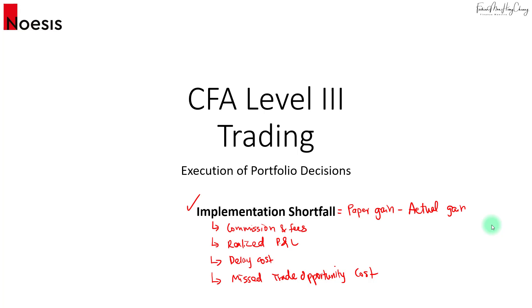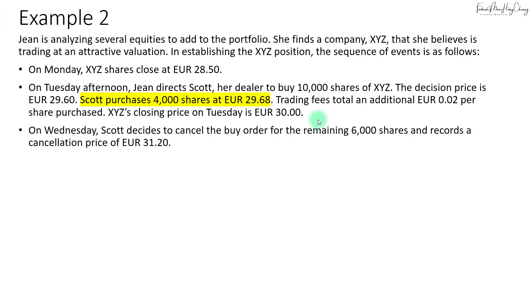Now let's look at the second scenario of our implementation shortfall. We have again Jean, looking at XYZ shares. On Monday the stock closed at 28.50, but on Tuesday afternoon she directs her dealer to buy 10,000 shares of XYZ with a decision price of 29.60. This time Scott managed to purchase 4,000 shares at 29.68 on Tuesday itself.